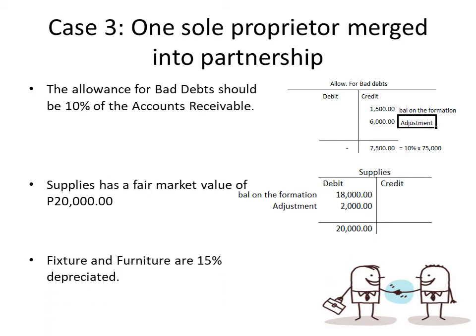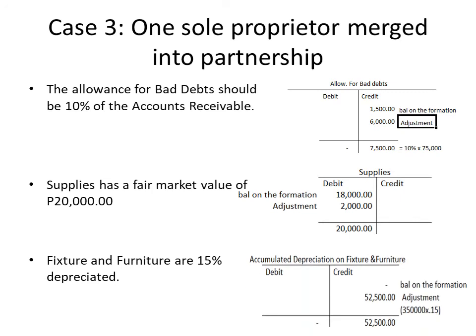For fixtures and furniture, the accumulated depreciation balance is $0. At 15% of $350,000, the required accumulated depreciation is $52,500. Entry: debit Igna's capital $52,500, credit accumulated depreciation on fixtures and furniture $52,500. Since there was no prior balance, we record the full $52,500. Both are balance sheet accounts, so we work with balance sheet accounts only — no nominal accounts.